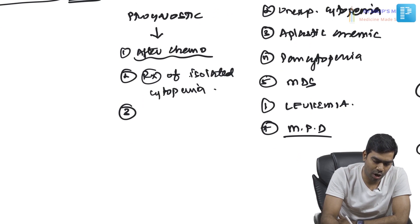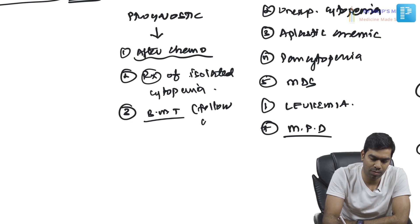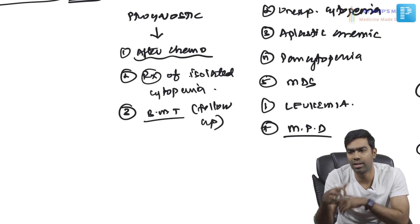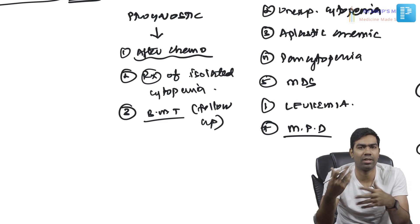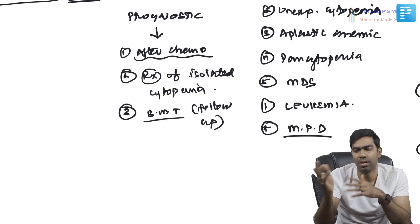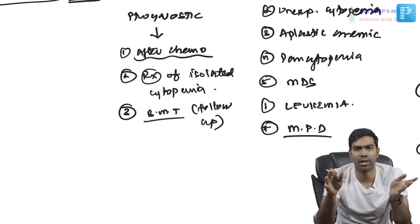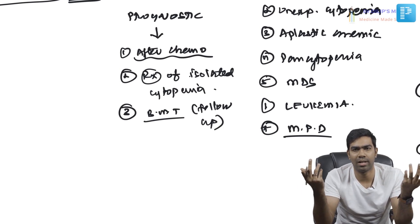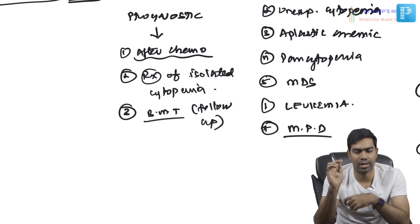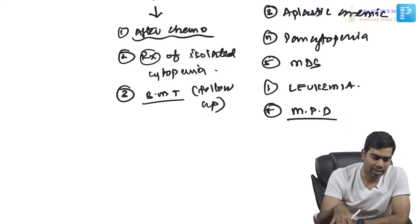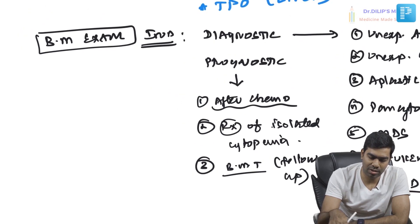In a bone marrow transplanted patient, for follow-up — to confirm whether the stem cells have been accepted and are proliferating, and whether the bone marrow has become functional after the transplant — you need to do a bone marrow examination. Before the transplant they completely ablate the marrow, and after the transplant you have to be sure the bone marrow becomes cellular and starts functioning. These are the indications for bone marrow examination.